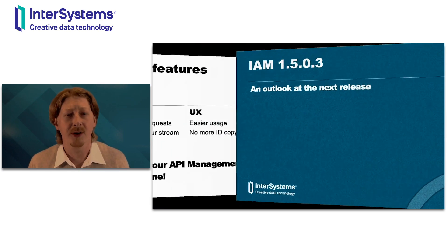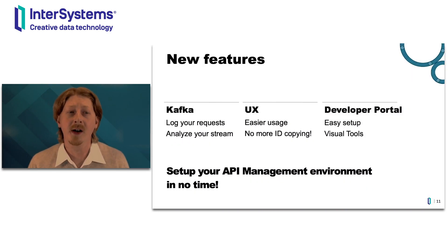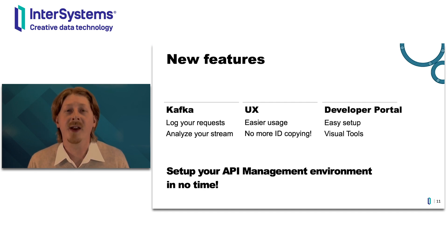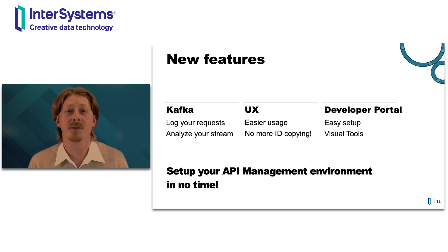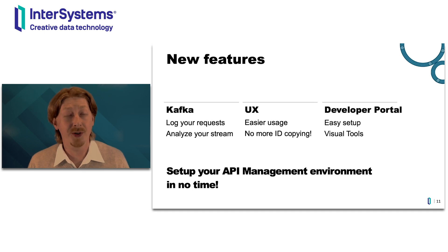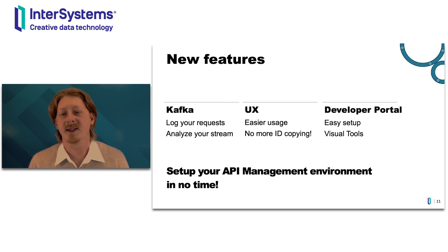So that's everything you need to know for the basics. Let's take a look at what IAM 1.5 has to offer. There are three major areas: Kafka support is one of the big topics — you can now take your HTTP-based traffic that goes into IAM and route it to a Kafka service, which allows for very interesting analytical use cases. The user experience has been improved by a lot — everything that used to be copying of IDs are now really drop-down windows so you can select how you want to link a route to a service. The developer portal also got huge improvements; many things that you had to do on a file level before are now directly manageable inside the portal. Setting up your API manager has never been easier.